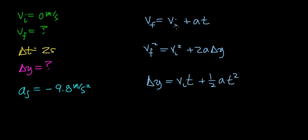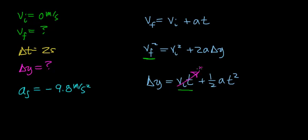I could use the first equation to find the final velocity, but I'm not looking for the final velocity — I'm looking for the height of the cliff. The second equation would work if I know the final velocity, but I don't know that yet, although I could use the first equation to find it. The simplest way — and one of the reasons we release this rock from rest — is that I can use the third equation to find the height of the cliff, because the initial velocity is zero, so that entire term vanishes, and I know the acceleration and the time.